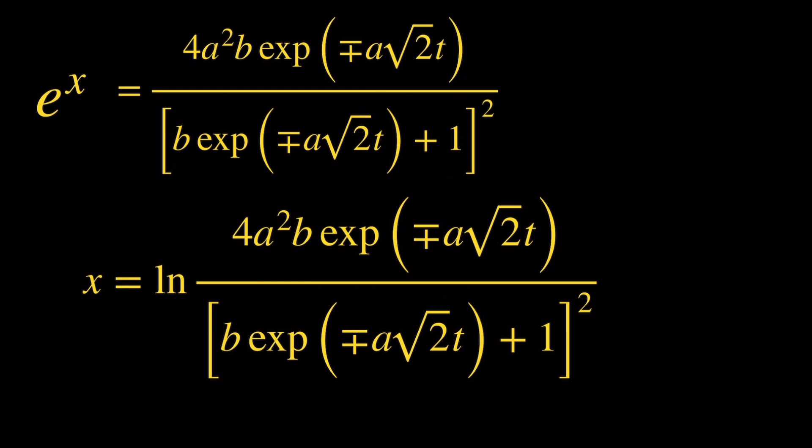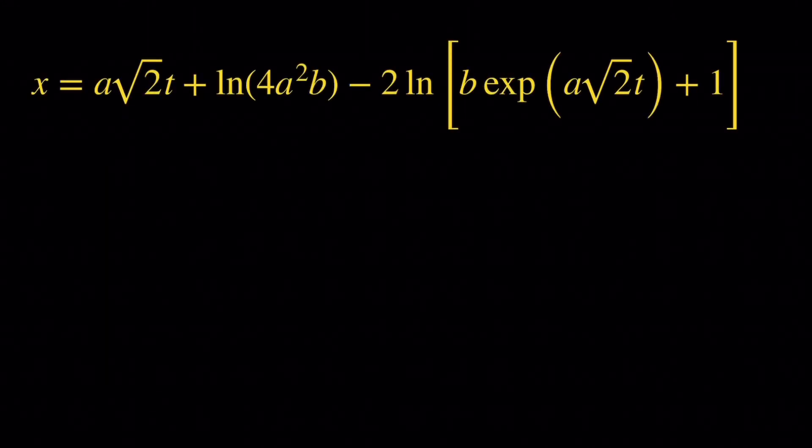We end up with two families of solutions. The first family is x equals a root 2 times t plus the natural log of 4a squared b minus 2 times the natural log of b times exponential of a root 2 t plus 1.